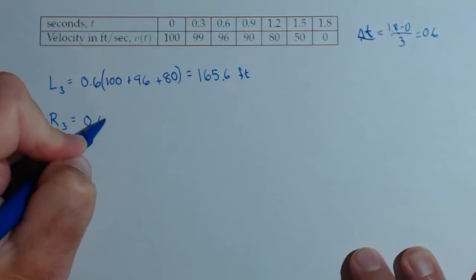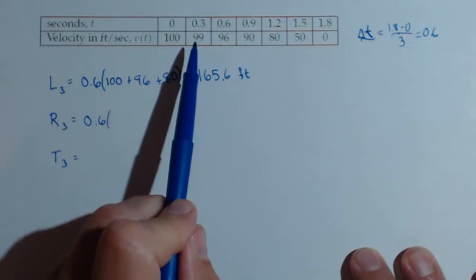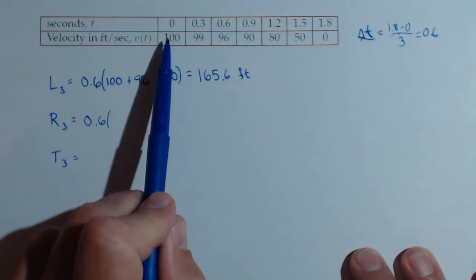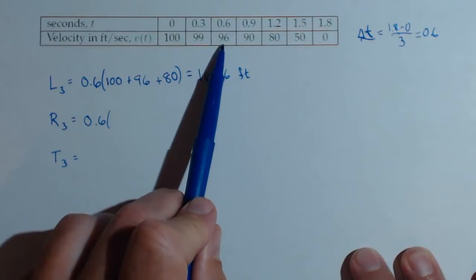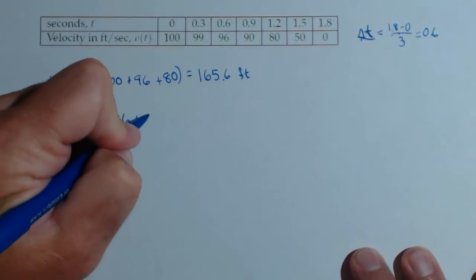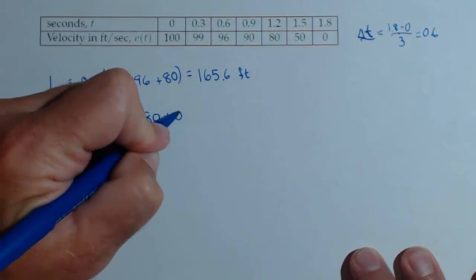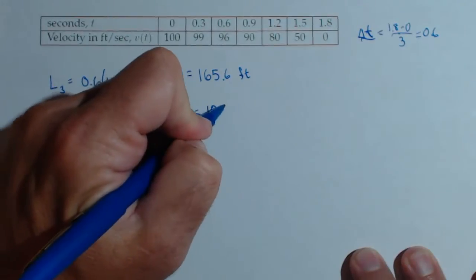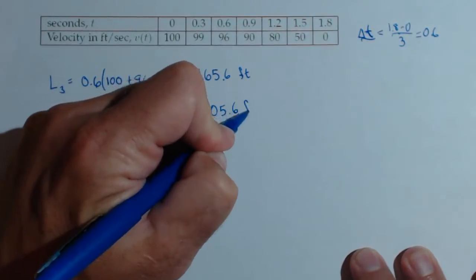Now the right-hand rule, remember the right-hand uses all the same middle points as the left-hand, it just doesn't start at the same place. So instead of starting at 100, we're going to start at 96, and we're going to use 96, 80, and 0. So 96 plus 80 plus 0, and the minimum distance we could have traveled was 105.6 feet.